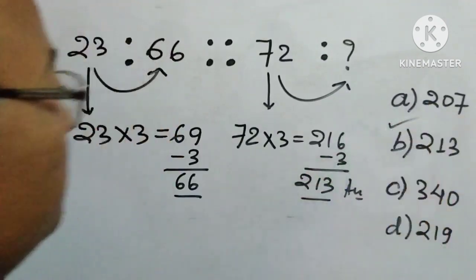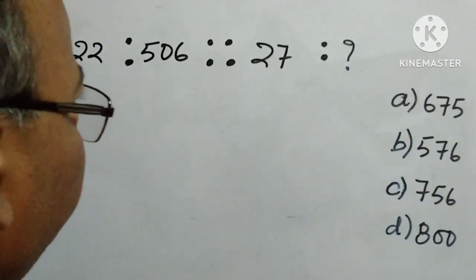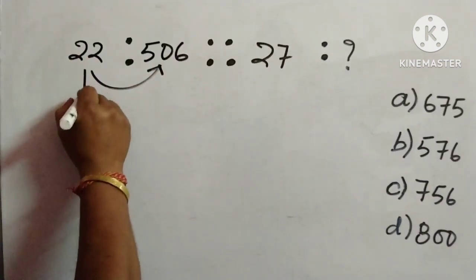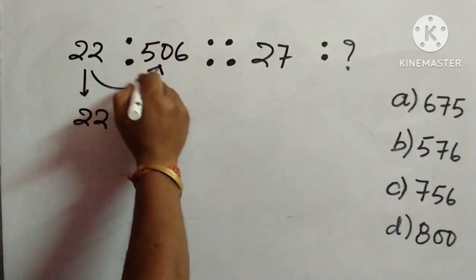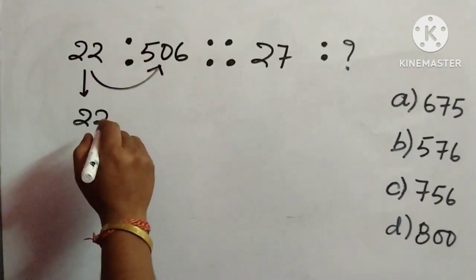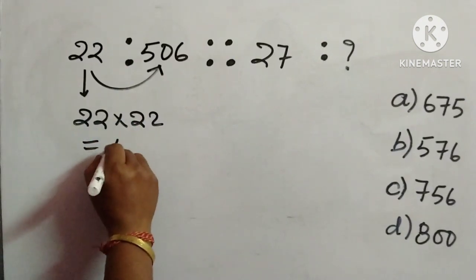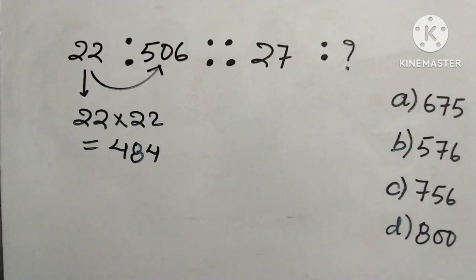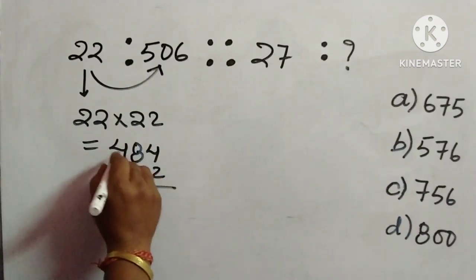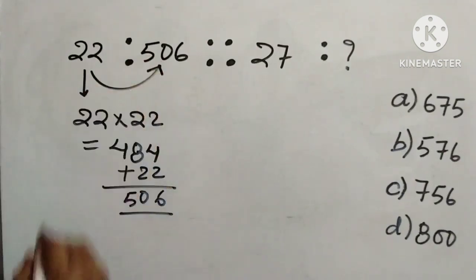So 213 is the answer — option B. Next question: 22 is to 506 equals 27 is to what? We have to find this number and four options are given. We will try to derive 506 from 22. Since 506 is much greater than 22, we try multiplying: 22 into 22 is 484. Then if we add 22 to 484, we get 506.